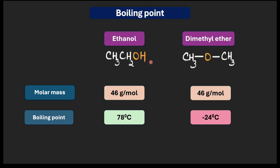This is why alcohols and phenols — molecules that can form hydrogen bonds — have a higher boiling point compared to molecules that cannot form hydrogen bonds. Dimethyl ether does not have a hydrogen atom attached to its oxygen, and is completely incapable of forming hydrogen bonds with other dimethyl ether molecules.